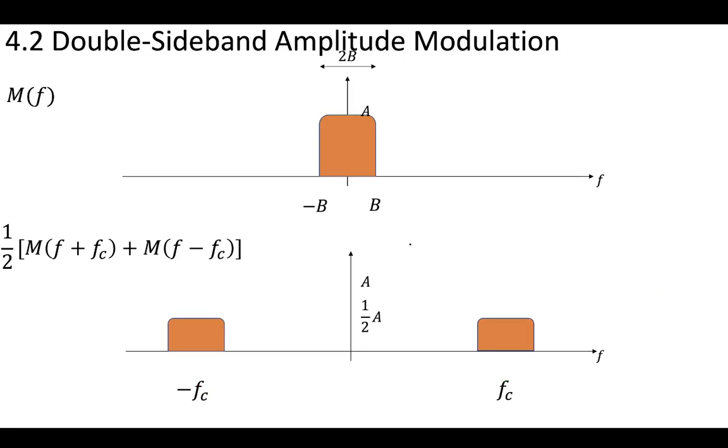If we were to visualize this, what this means is that our original message, which had a bandwidth B, is now transported to minus fc and plus fc, and each one of these is also going to have a bandwidth of 2B. Also, we've gone from a height of A to now being one half of whatever the amplitude of the message was.